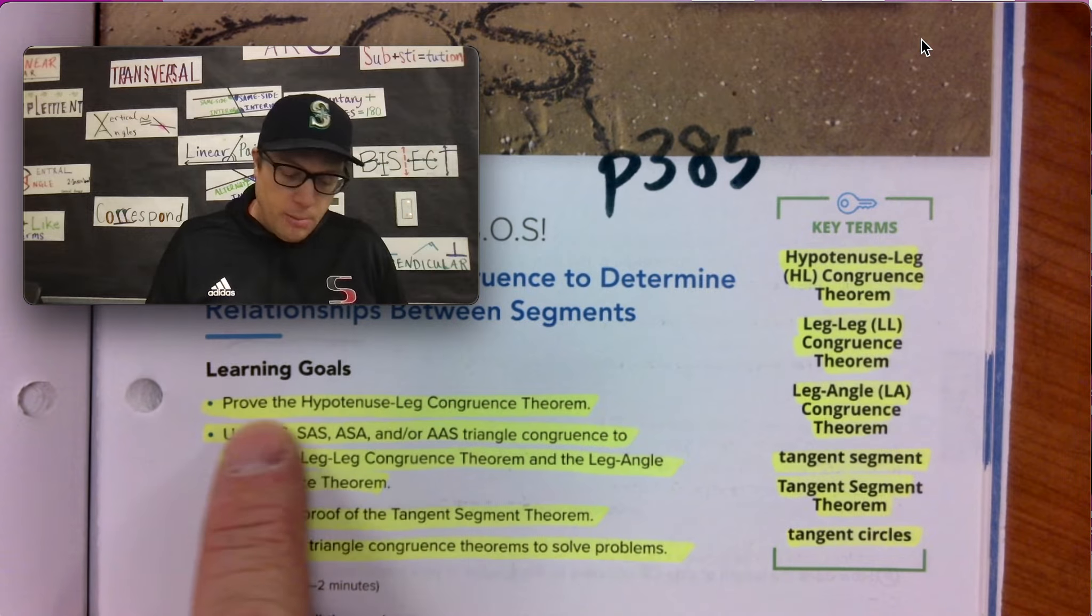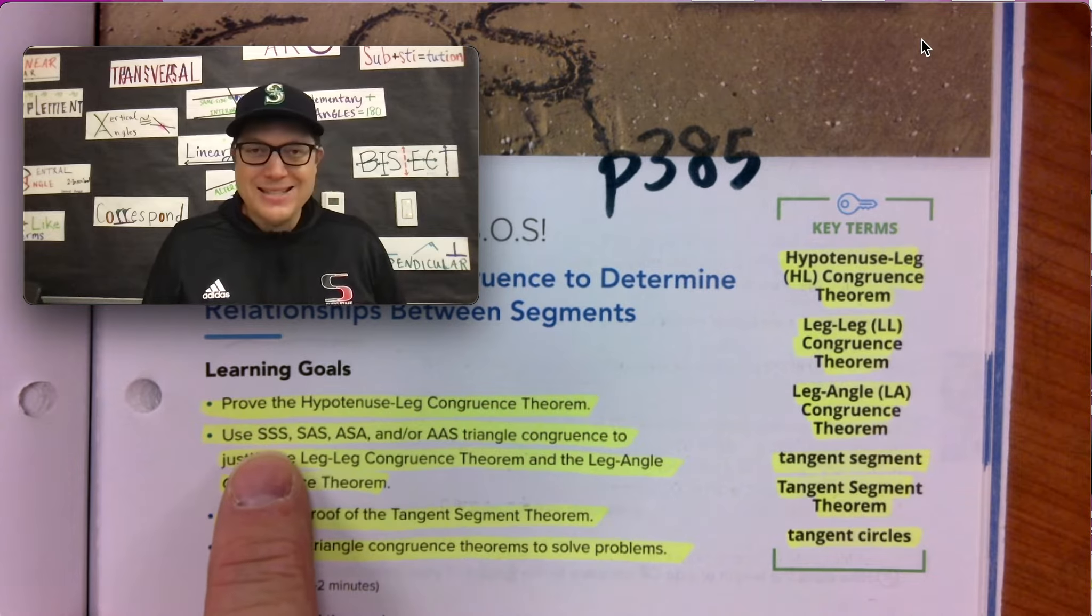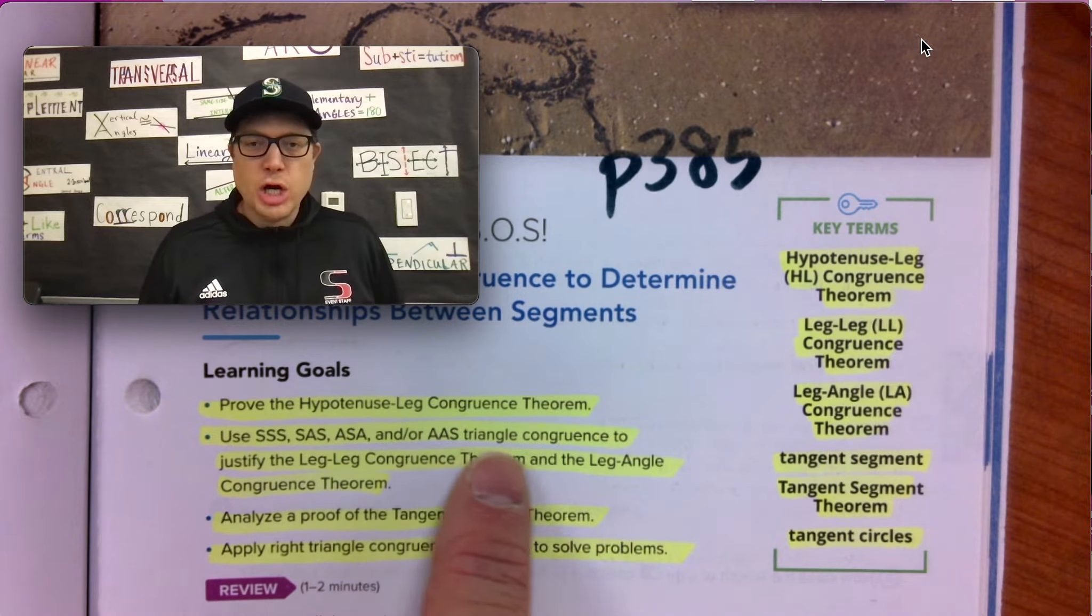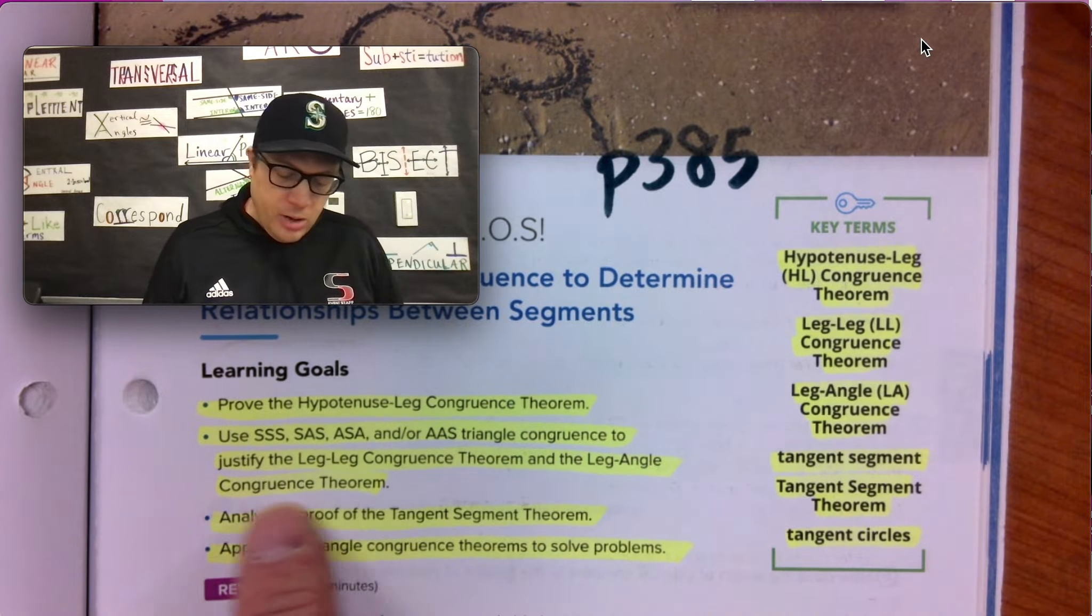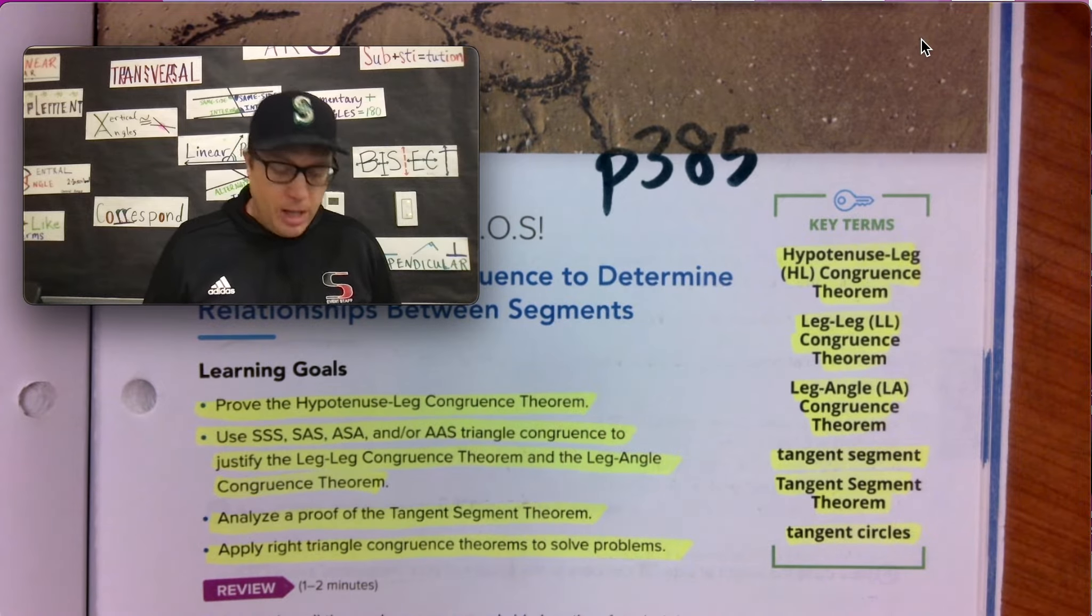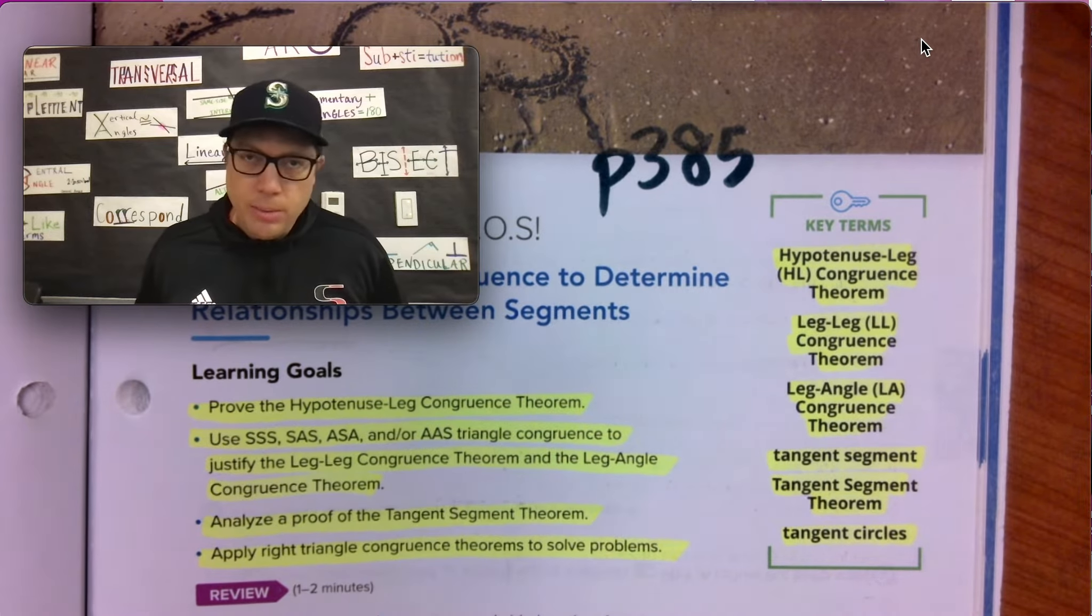Our learning goals: Prove the hypotenuse leg congruence theorem. Use SSS, SAS, ASA, and or AAS triangle congruence to justify the leg-leg congruence theorem and the leg-angle congruence theorem. We're going to analyze a proof of the tangent segment theorem and we're going to apply right triangle congruence theorems to solve problems.